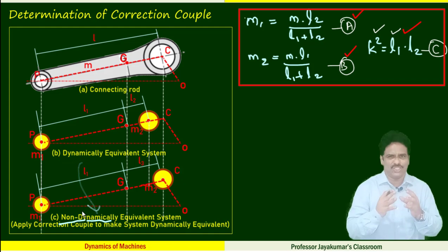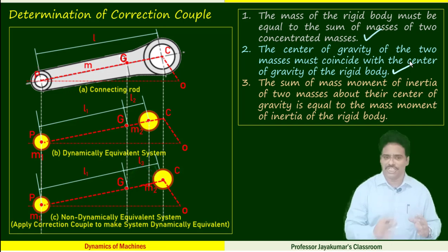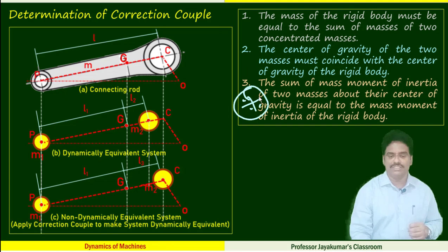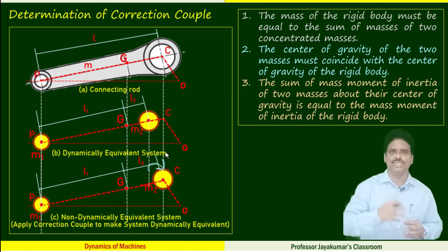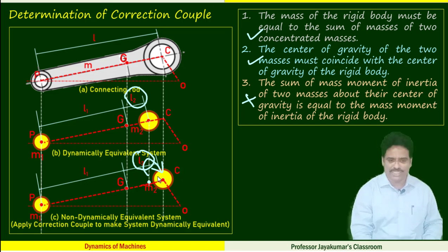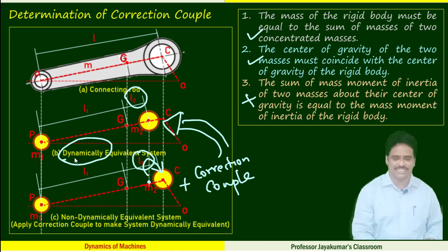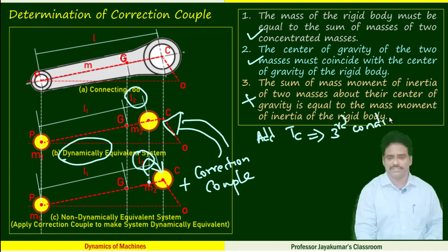Some condition is not satisfied. Because of the shift, the first two conditions still remain the same — total mass remains the same and the center of gravity is unchanged. But the third condition is not satisfied, because we have changed the distance, and the mass moment of inertia of the new system has become slightly higher than the dynamically equivalent system. So, I will still put M2 at the crank end but additionally apply one correction couple so that theoretically the problem becomes a dynamically equivalent system problem. When I add the correction couple, the third condition is also satisfied.